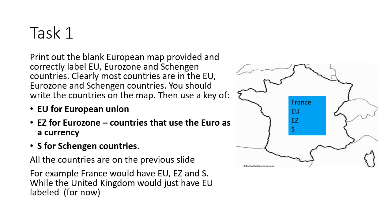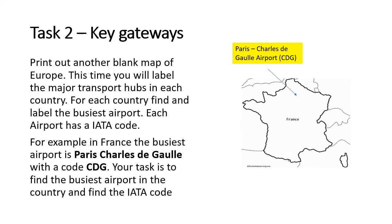For instance, if you look at France, it's a member of the European Union, the currency is the Euro, and they were originally one of the Schengen countries. If you're doing this for Great Britain — for example, the United Kingdom — you would just label it EU, because for now anyway, we're a member of the European Union.